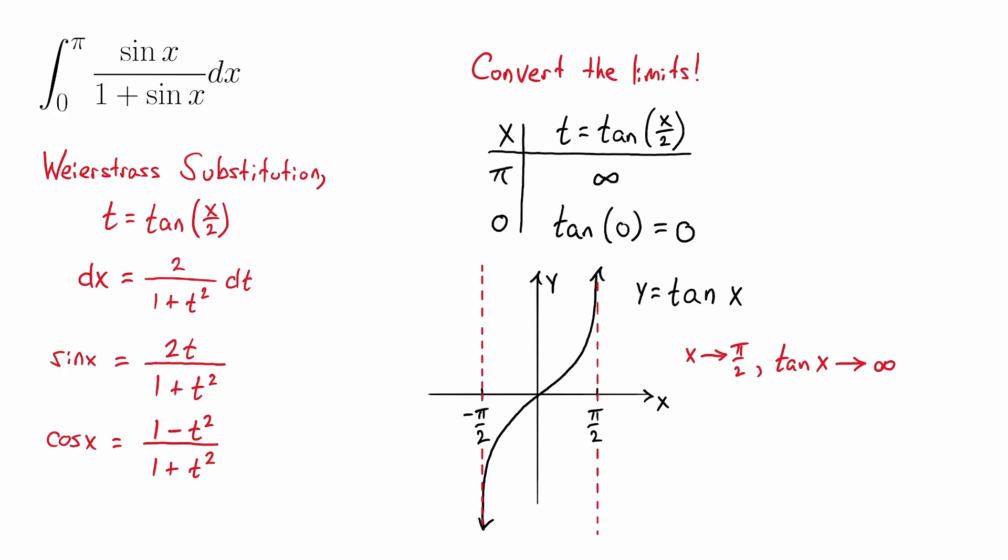The other way to see this is to think of the graph of tangent of x. As x approaches π over 2, you can see that the graph due to the vertical asymptotes, that's going to lead to tangent of x approaching positive infinity. That's another way to do the conversion there for your original x limit, π converting to the new limit for t with the Weierstrass substitution going to positive infinity.